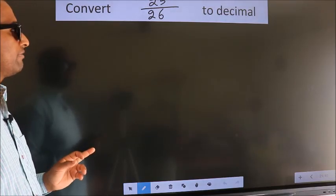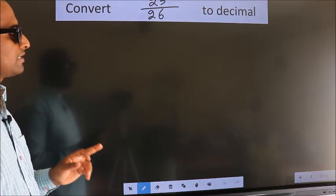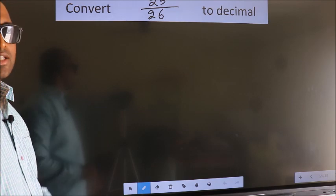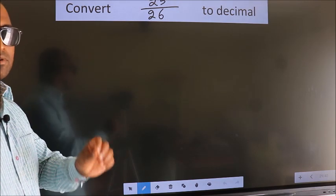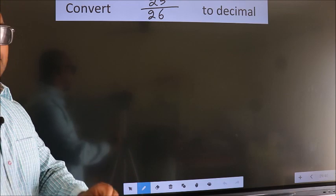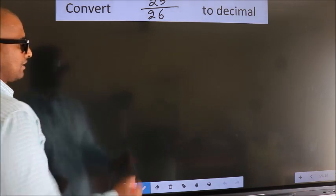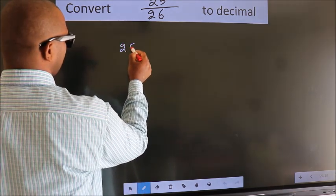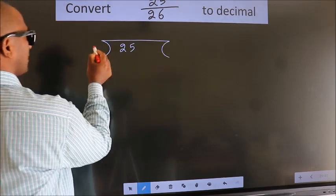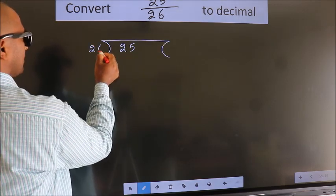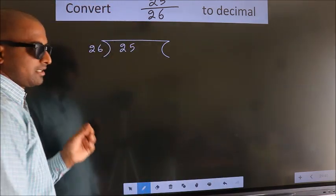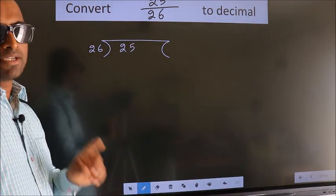Convert 25 by 26 to decimal. To convert this to decimal, we have to divide. And to divide, we should frame it in this way: 25 here, 26 here. This is your step 1.